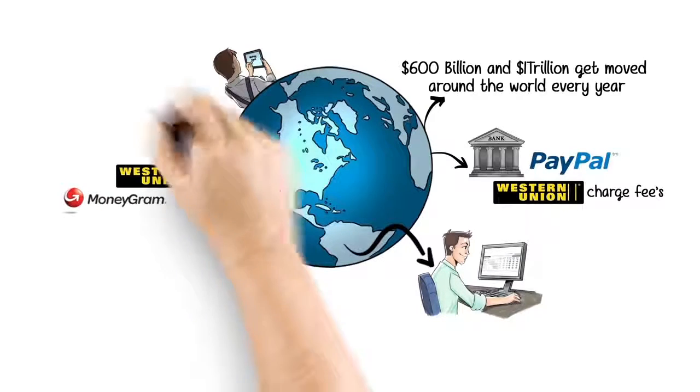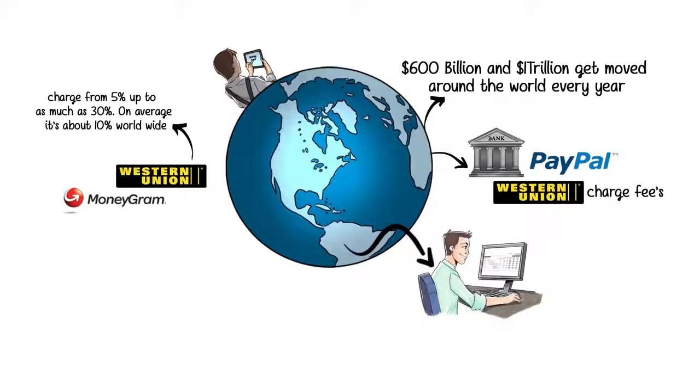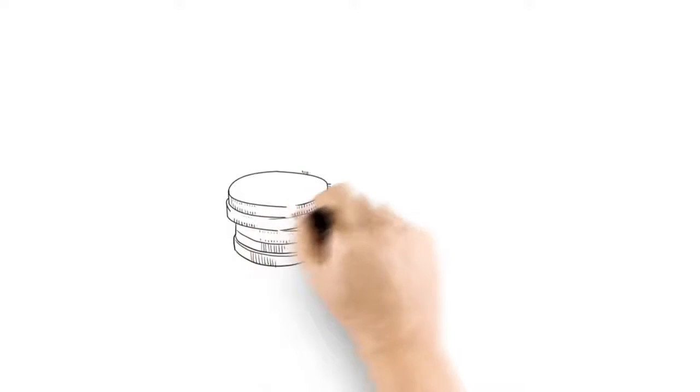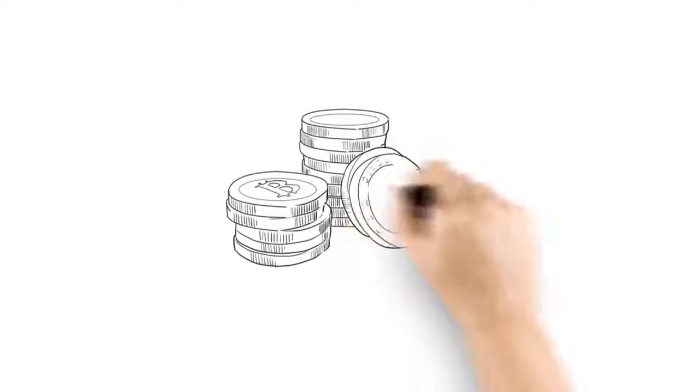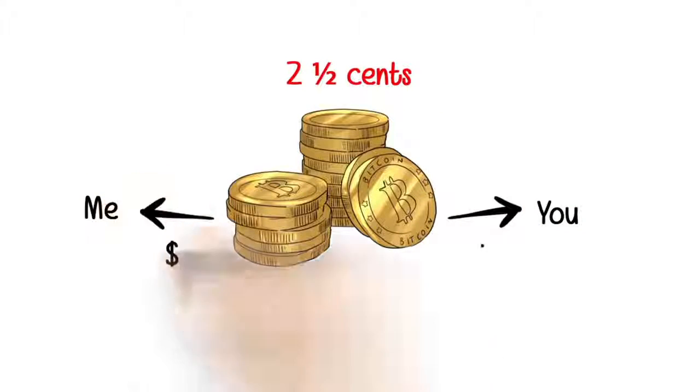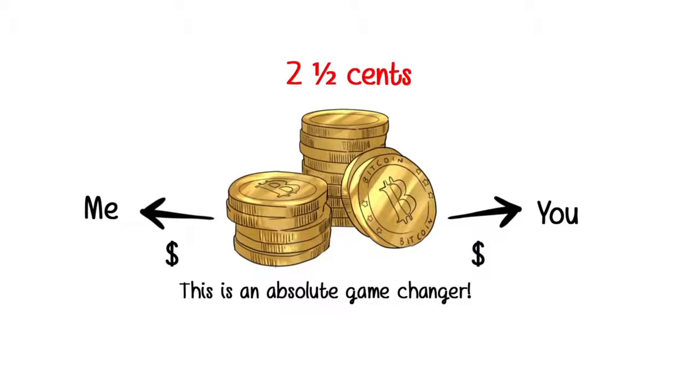Western Union, MoneyGram and other companies like them charge from 5% up to as much as 30%. On average, it's about 10% worldwide. That means we are talking about fees of $60 billion to $100 billion per year. With Bitcoin, everyone has access with no approvals needed. A typical Bitcoin transaction has a fee of about 2.5 cents. This is an absolute game changer.